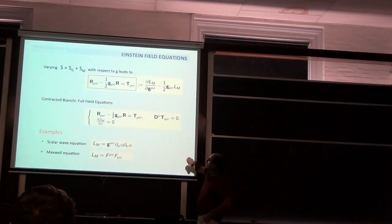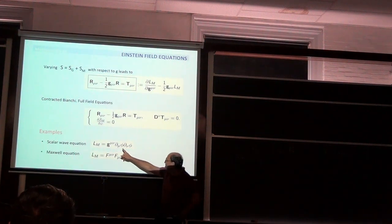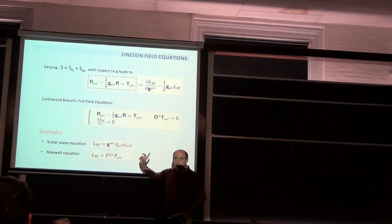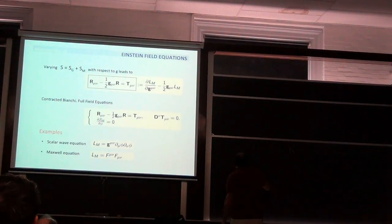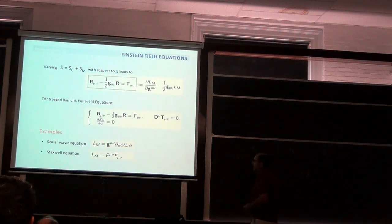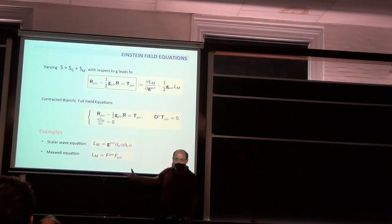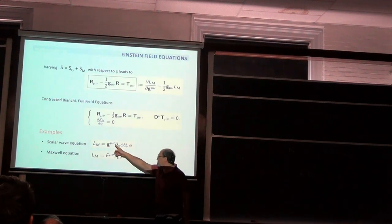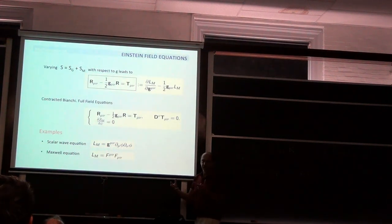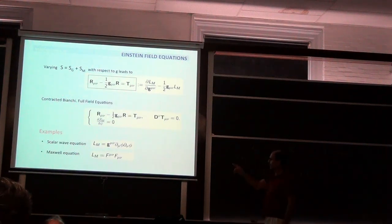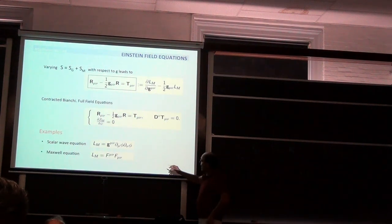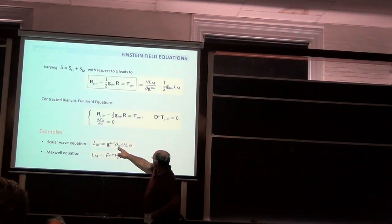One example of a matter field would be just a scalar. So psi is a scalar defined on the manifold, taking values in R or C. The simplest Lagrangian you can make is to take derivatives of phi and contract with the metric g to get a scalar: g-mu-nu partial-mu phi partial-nu phi. Using the procedure we discussed, I can calculate the energy-momentum tensor.